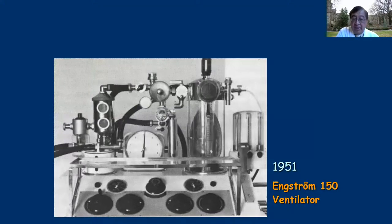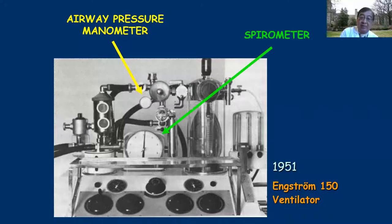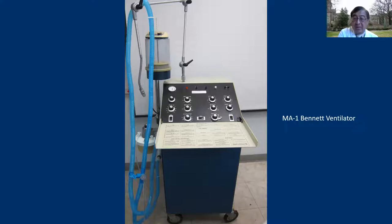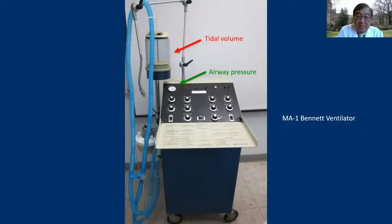While I'm not that old, I have not seen the 1951 Armstrong 150 ventilator, but this is one of the first mechanical ventilators. The airway pressure manometer is that little round thing, and you have a spirometer for tidal volume. Then the MA1 — I actually operated the MA1 when I was a resident. The tidal volume is that little accordion thing; it goes up and you look at it and say, okay, this is about 300 cc tidal volume.